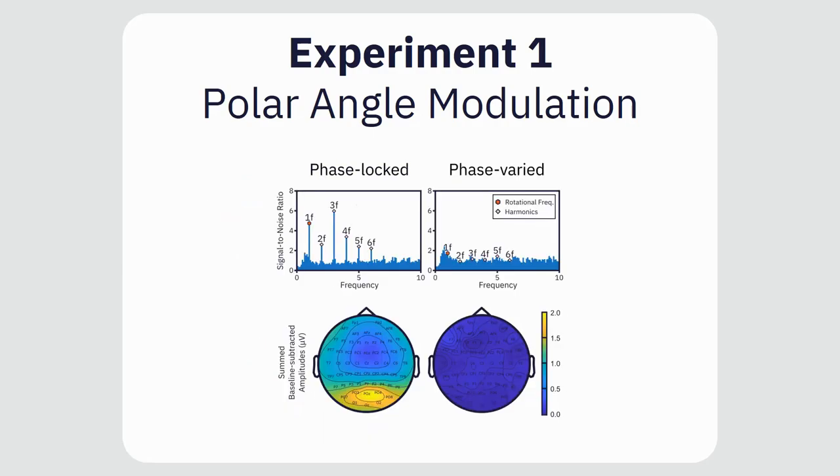And this was exactly what we found. There were very clear frequency components related to the polar angle modulation in the phase locked condition, but the same frequencies were at noise levels in the phase varied condition. Since all other stimulus properties were constant in these two conditions, this difference indicates that these frequencies are produced exclusively by the polar angle modulation.